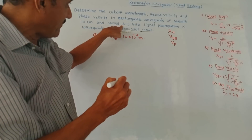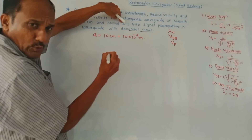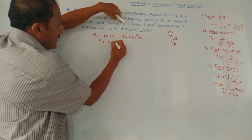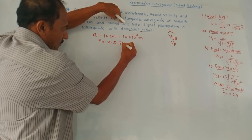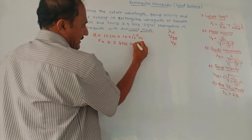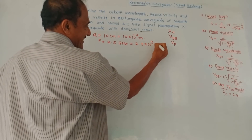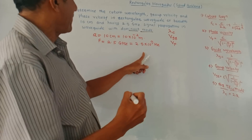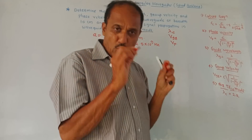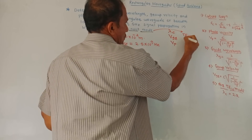The waveguide has a 2.5 gigahertz signal propagation. This value, 2.5 gigahertz, is the operating frequency. So f is 2.5 gigahertz, which is 2.5 × 10⁹ hertz. With dominant mode — dominant mode means this is TE10 mode.